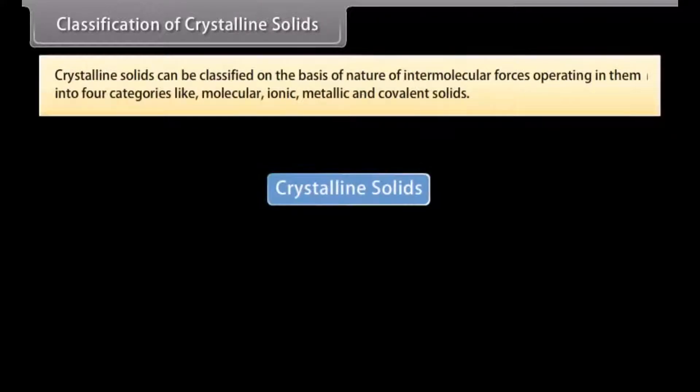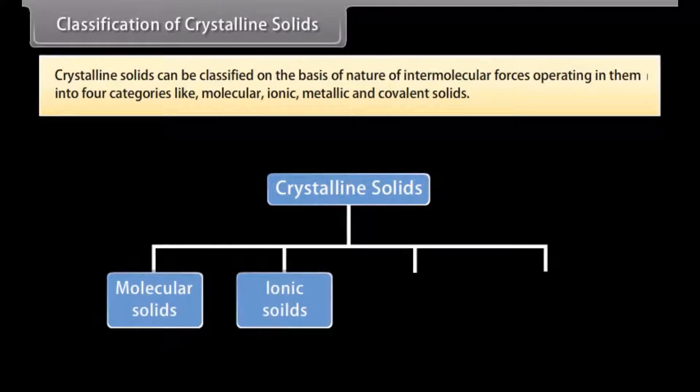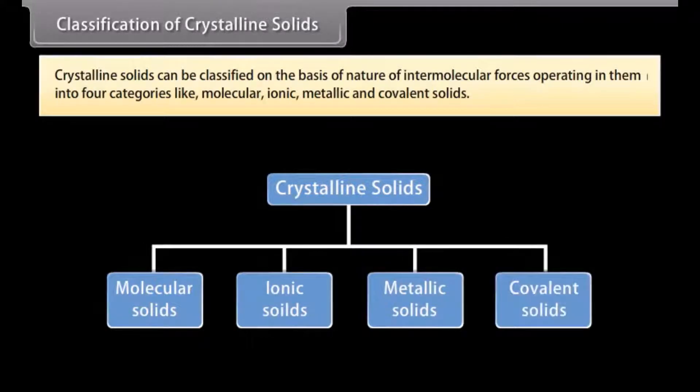Difference between crystalline and amorphous solids. Classification of crystalline solids. Crystalline solids can be classified on the basis of nature of intermolecular forces operating in them into four categories: molecular, ionic, metallic, and covalent solids.